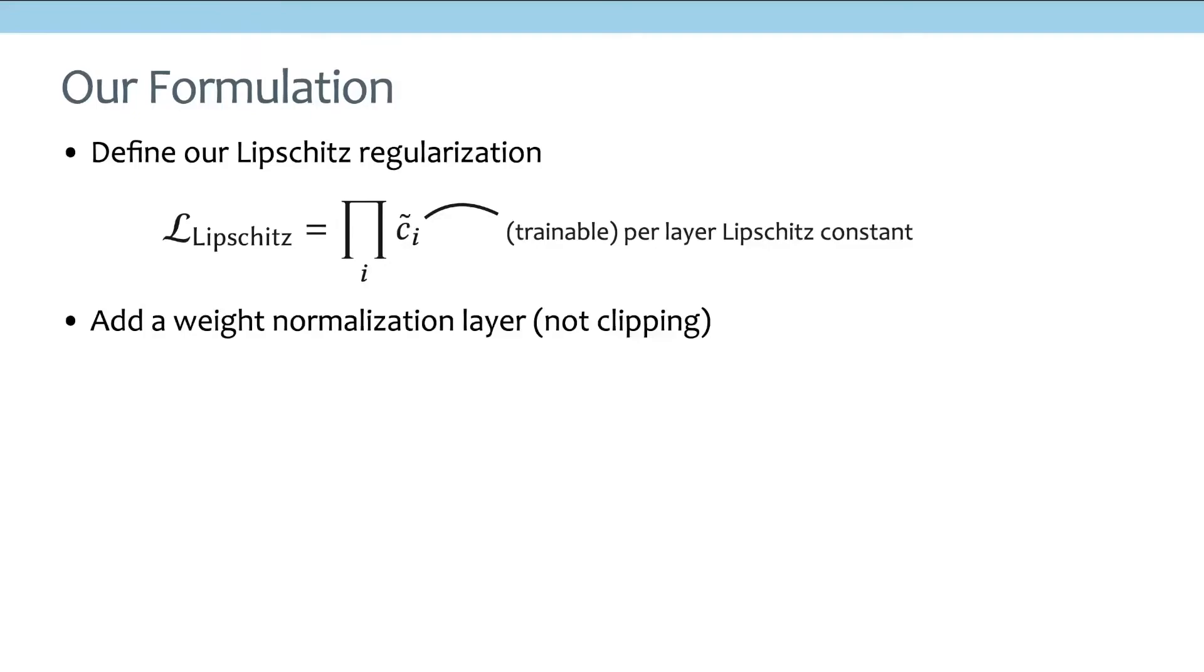And once you have this learnable C tilde, then we use this to add a weight normalization layer in the forward pass. For example, this is the equation for one single layer in the MLP. And if you want to add weight normalization, it basically means that when you do the forward pass, you're not going to use this W directly. But instead, you are going to use this W hat, which is the normalized version of the W.